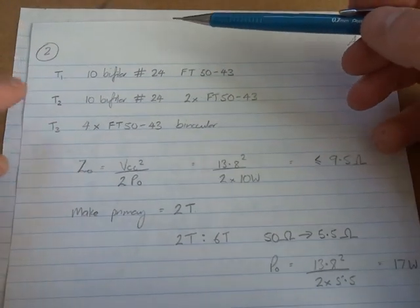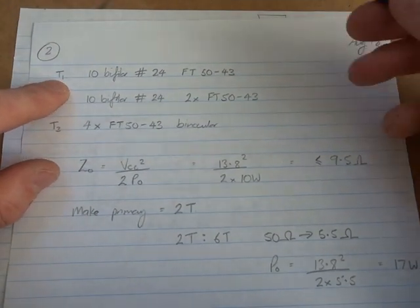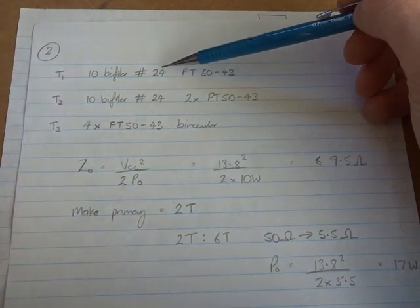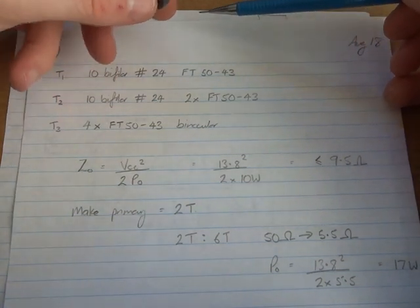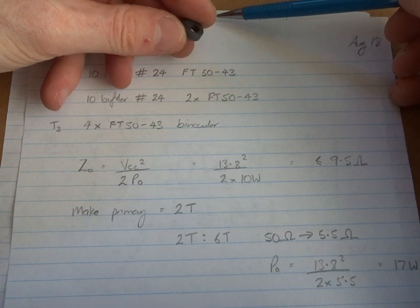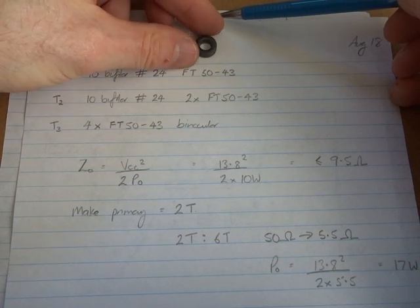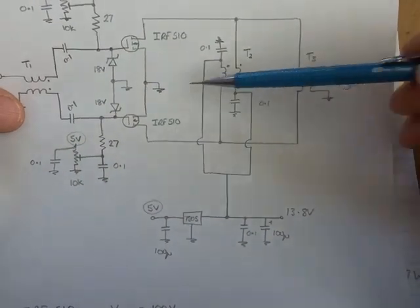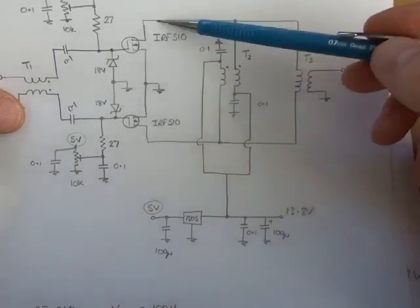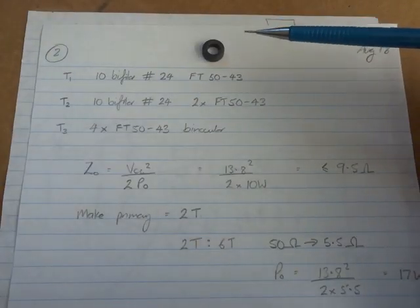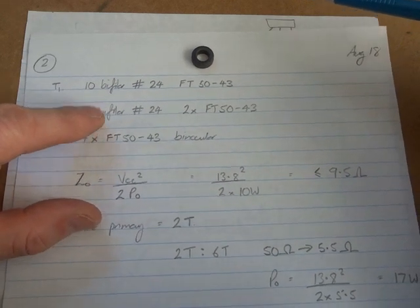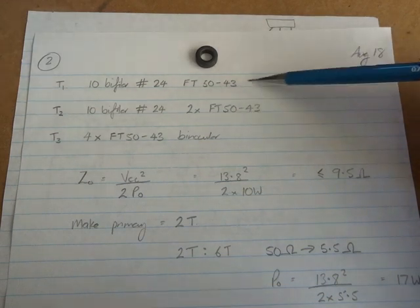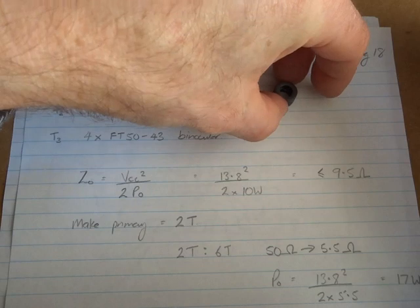So looking at the transformers. So the input transformer that does the phase splitting, that'll be a 10 turn bifilar wound number 24 gauge. And we'll put that onto one FT50-43 toroid there. T2 that's the one in the collectors. Not collector sorry. In the drains providing our VCC. Again that'll also be 10 bifilar turns of number 24 gauge. And that'll be on a stacked FT50-43. So we'll use two of those stacked up.